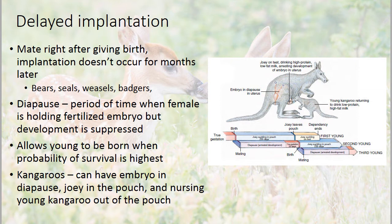Several mammals exhibit delayed implantation, where they'll mate soon after giving birth, but implantation of the embryo doesn't occur until months later. The embryo just floats in the uterus, and it's not until it actually implants in the uterine lining that it starts to grow into a fetus. Bears, seals, weasels, and badgers do this. That period between fertilization and implantation is called diapause.